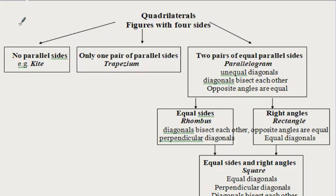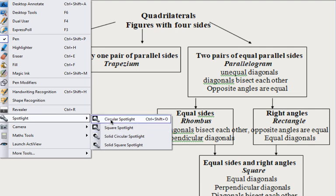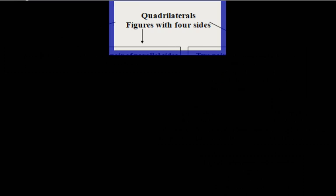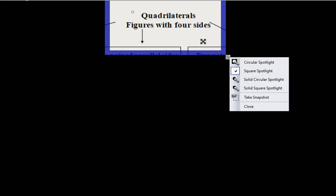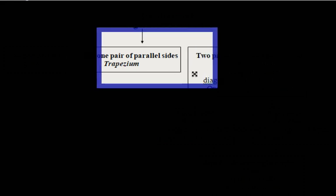Going one step up to quadrilaterals, it might be a good idea to revise what quadrilaterals are. Quadrilaterals are figures with four sides. They come in various shapes and forms — the sides may not be parallel at all, giving an irregular quadrilateral, or it might be a kite where each two adjacent sides are equal. You may also have only one pair of parallel sides, in which case it is called a trapezium.